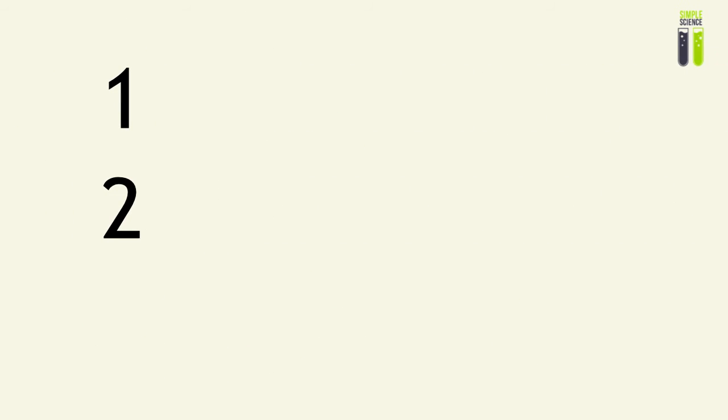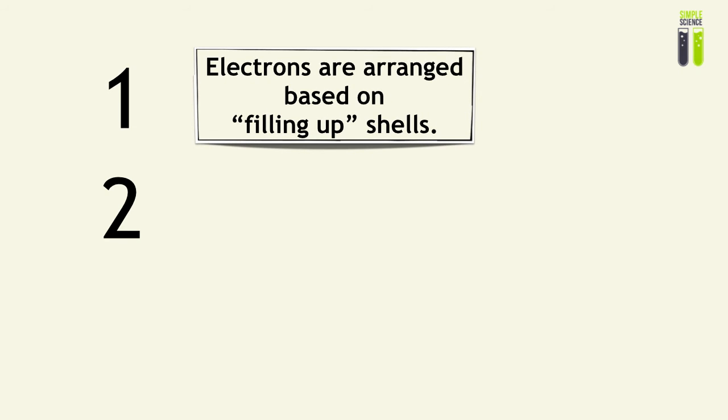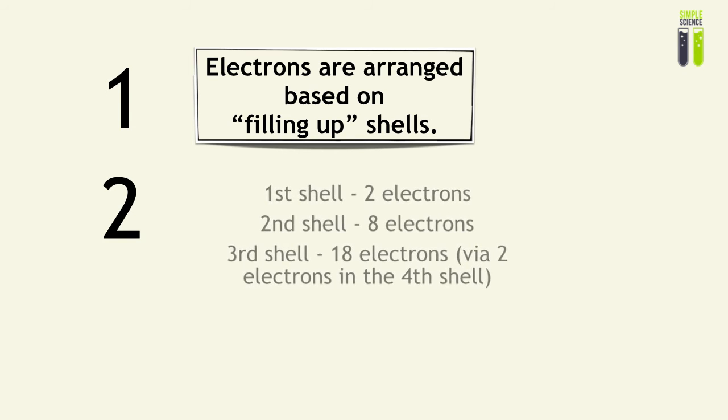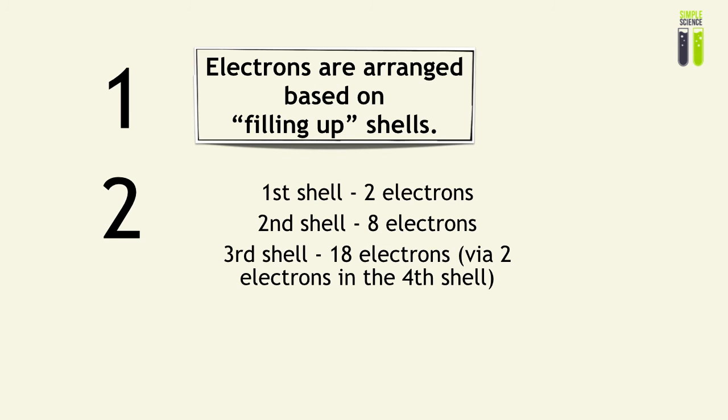So let's look at some summary notes that you must take away from this video. How we are able to arrange the electrons around an atom will be based on the concept of filling up shells based on principles, which are that the first shell can occupy two electrons. The second shell can occupy the next eight electrons. And the third shell will occupy 18 electrons, where it will occupy the first eight in the third shell. And then in the fourth shell, it will occupy two electrons. And then the remaining 10 will be occupied in the third shell as it resumes filling up.